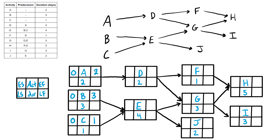We take the early finish of the predecessor and bring it into the early start of the successor. The two from A comes into D, and adding the duration gives an early finish of four. For activity E, we take the largest of the two competing predecessors — three or one — so we bring in three, and three plus four gives seven for the early finish. Activity F only has one predecessor, so we bring that four straight in and add the duration to get five.